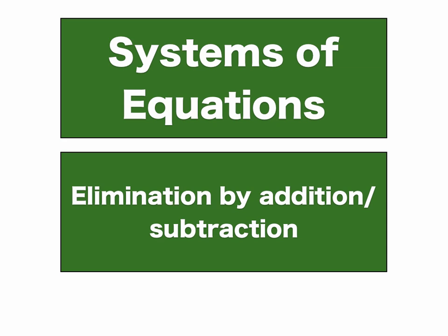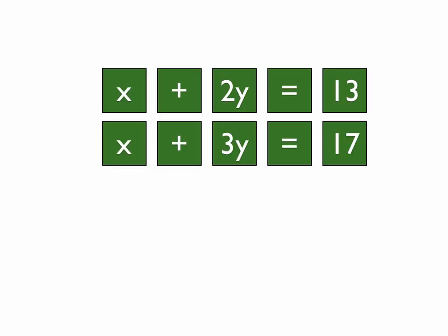Today we're going to talk about how to solve systems of equations by addition or subtraction. We're going to eliminate things by either adding or subtracting something. So we have a problem like x plus 2y equals 13, and x plus 3y equals 17.